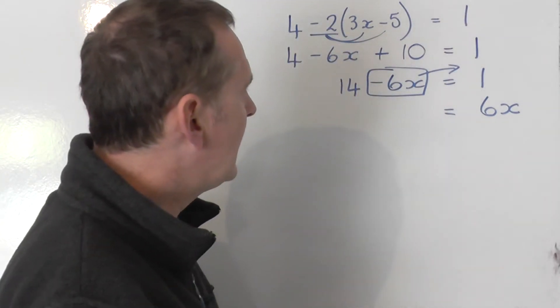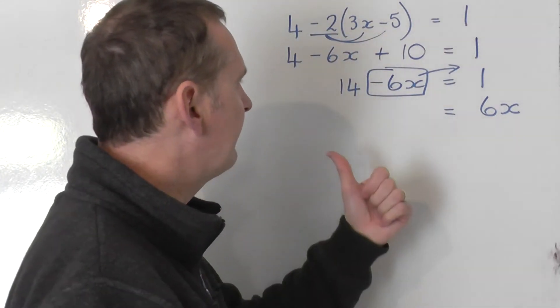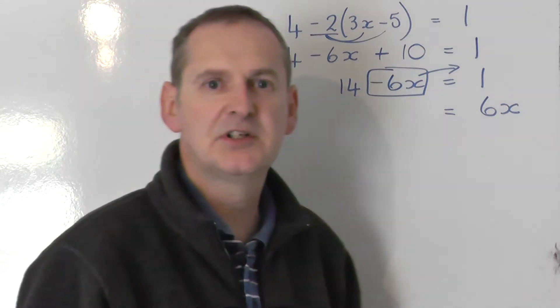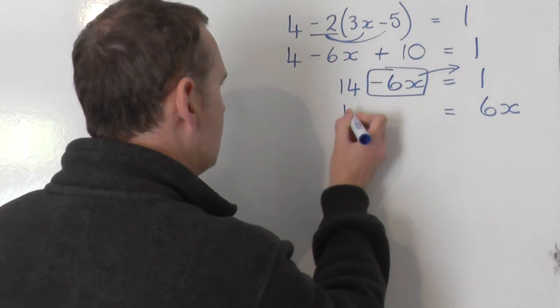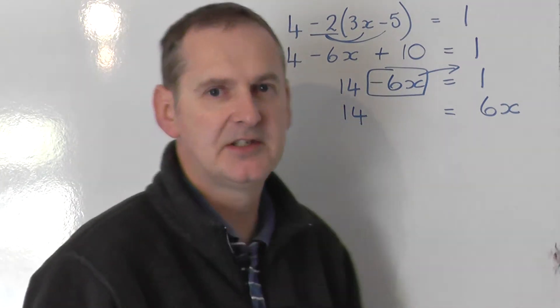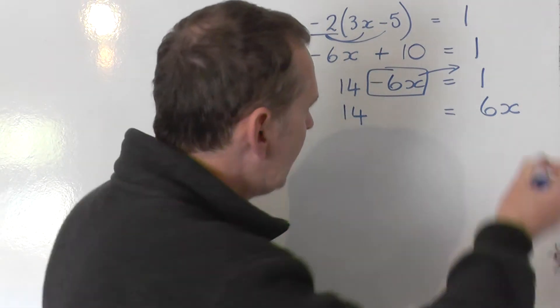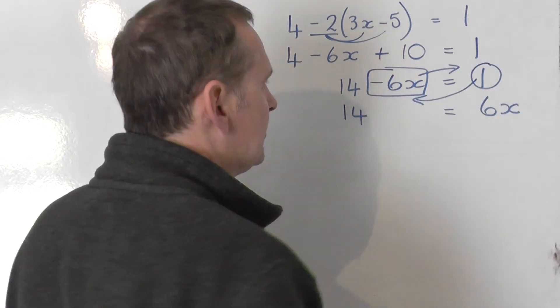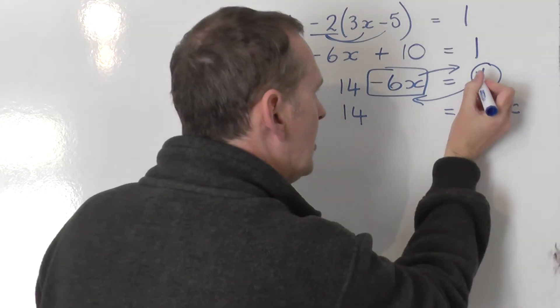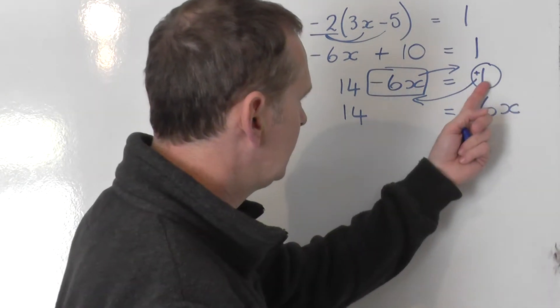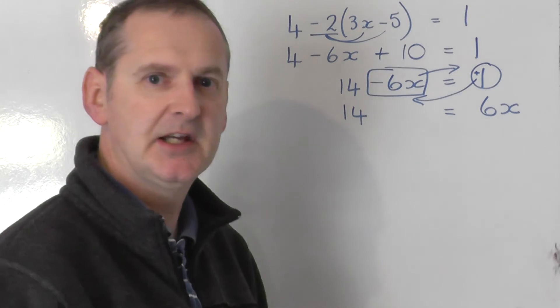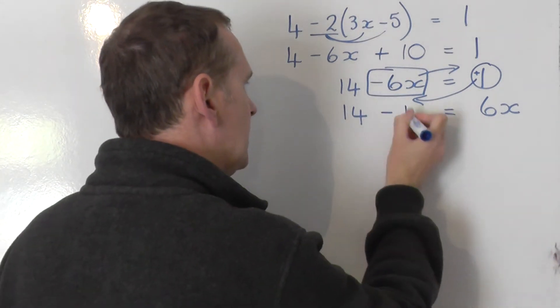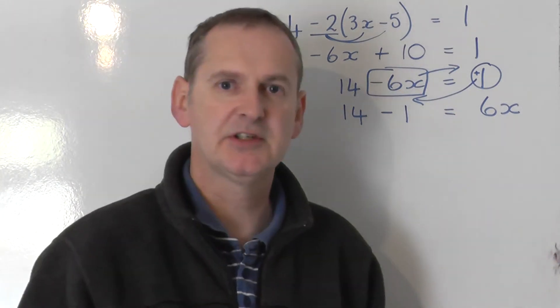So what I'm going to do now is take the numbers to the left. The 14 and the 1 go to the left. The 14 is already on the left. It doesn't swap sides, it doesn't swap sign. And so the 1 now needs to be dragged across to the other side to join it. Now at the moment there's a plus in front of it on the right hand side. Take it to the other side, it changes to a minus. So I get minus 1 on the left hand side.